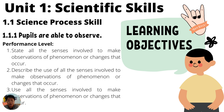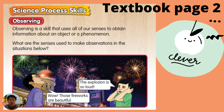So are you ready to learn? Let's look at our textbook, page two. Today we are going to learn about Observing. Observing is a skill that uses all of our senses to obtain information about an object or a phenomenon. We can use our eyes, our ears, our nose, tongue, and skin to gather information about something.